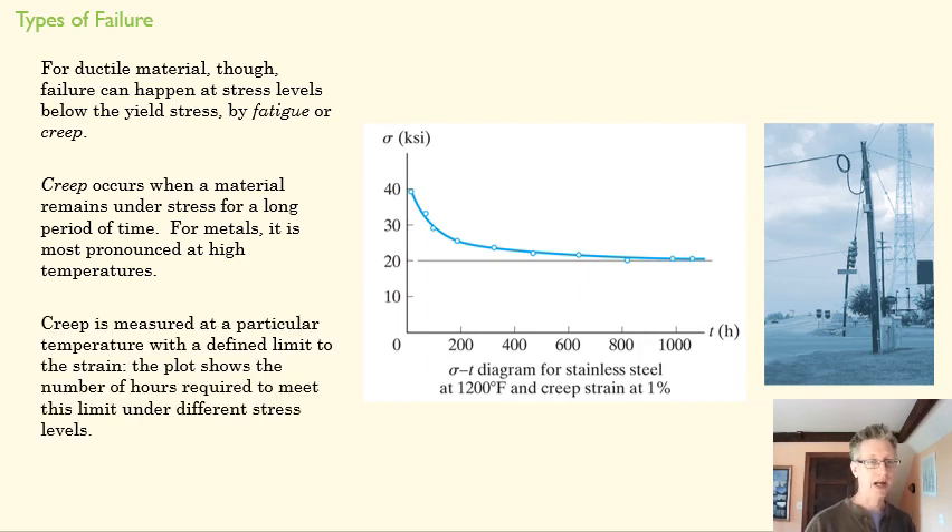Creep occurs when a material is under stress for a long period of time. So we look at this telephone pole here and it's got probably a stress pulling it this way to the left. And that stress is probably well below its yield stress, but you can see that the telephone pole has started to bend. This is because that low stress is being applied over a long period of time. And so you get a creeping change to the shape of that. You get plastic deformation even though the stress never reaches the plastic region. It never goes beyond the yield strength.